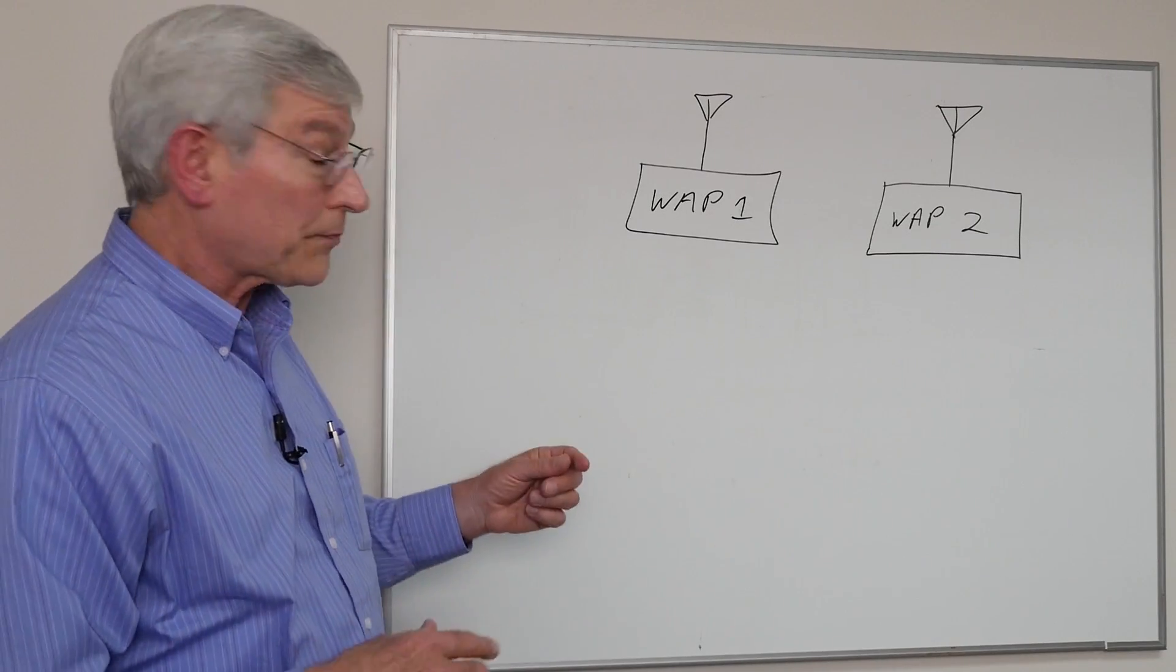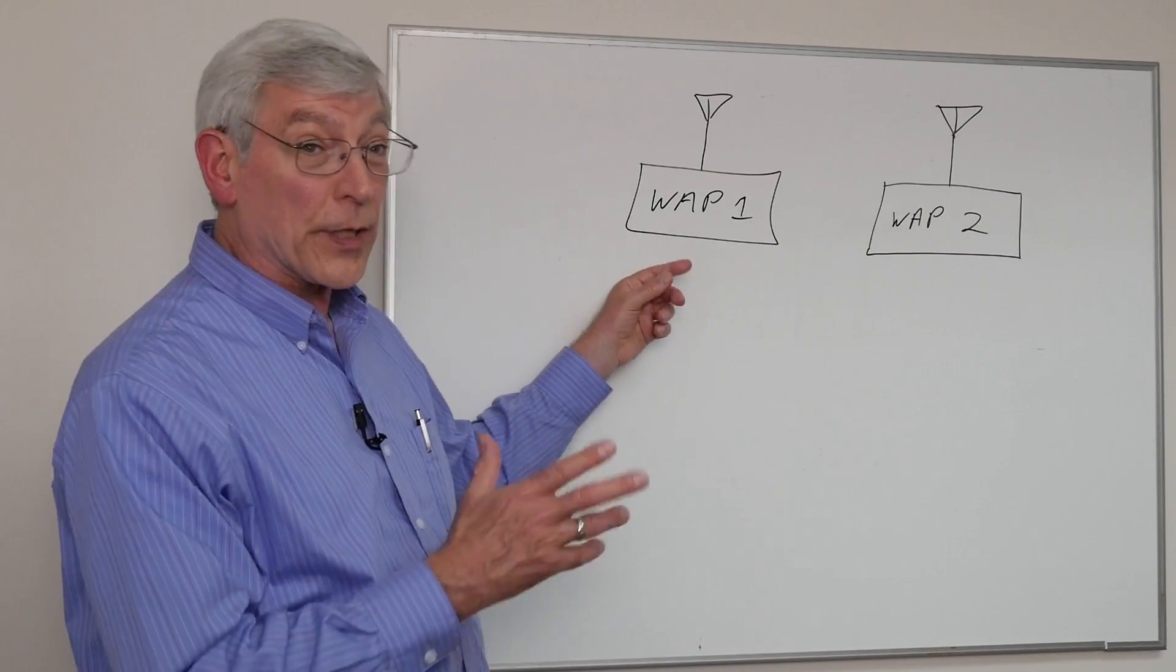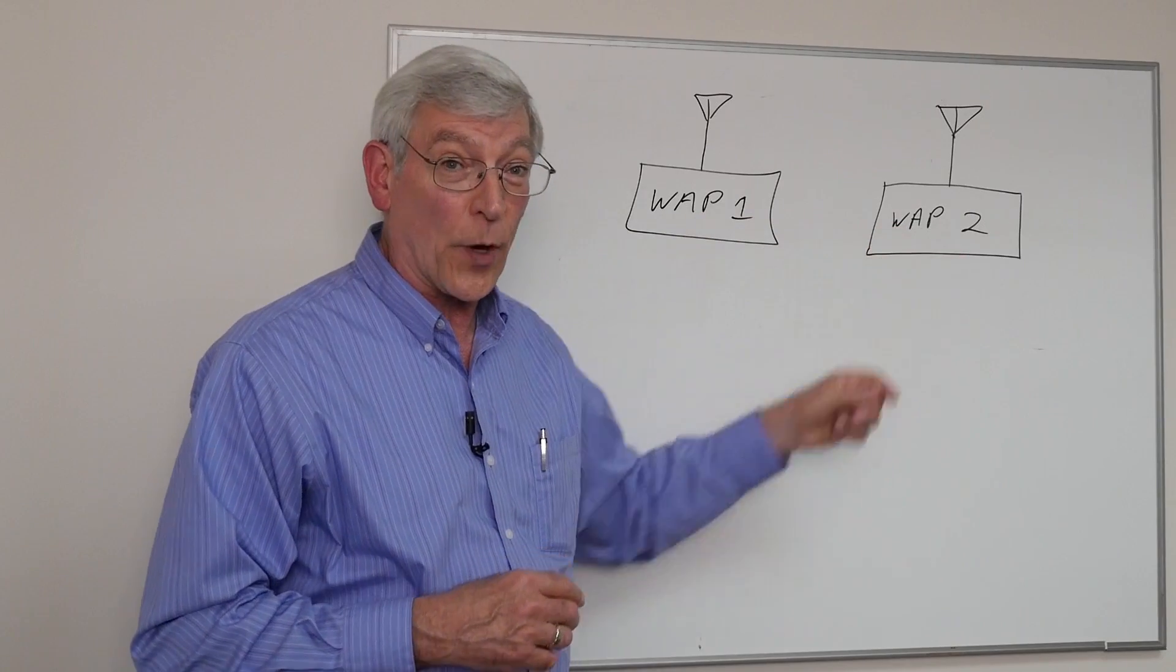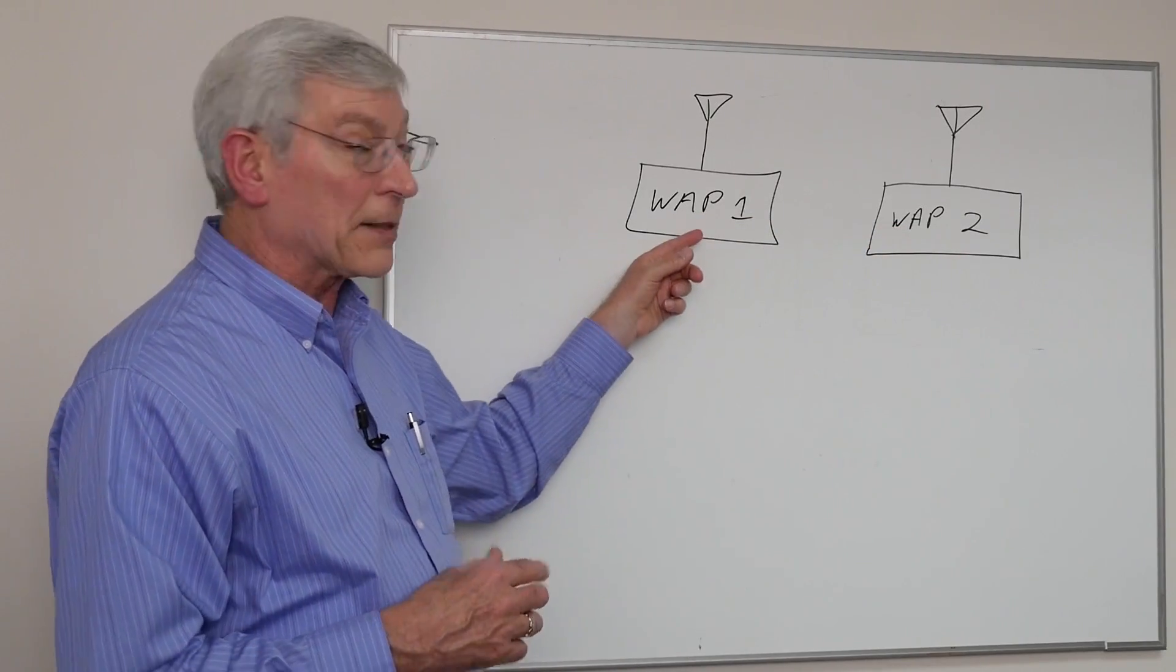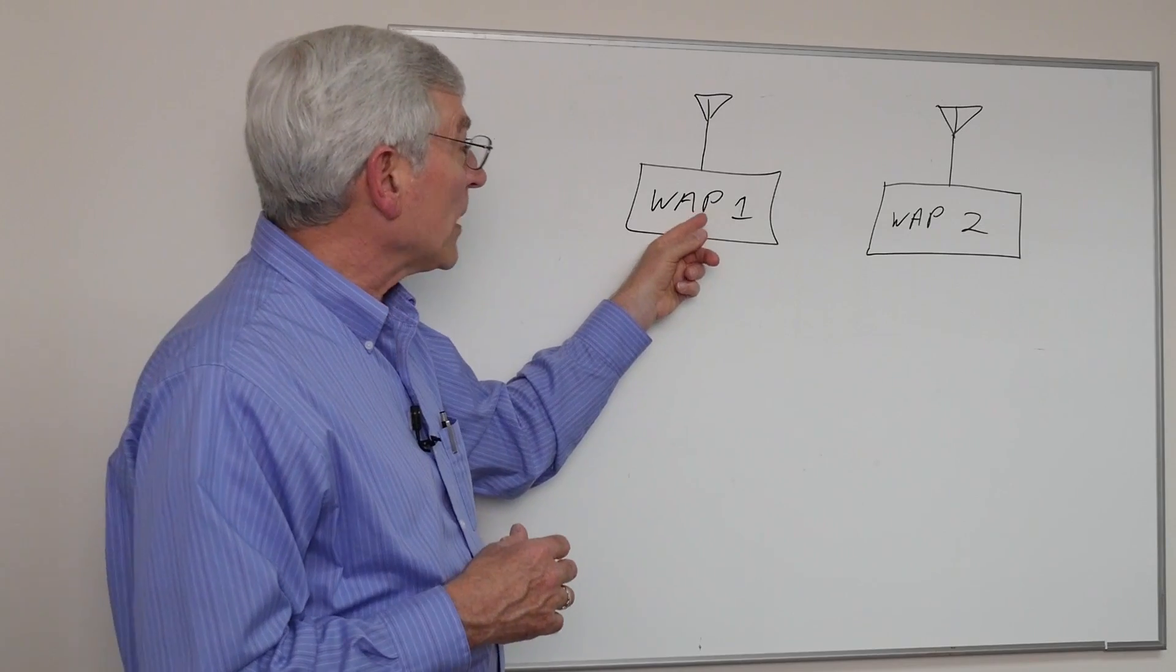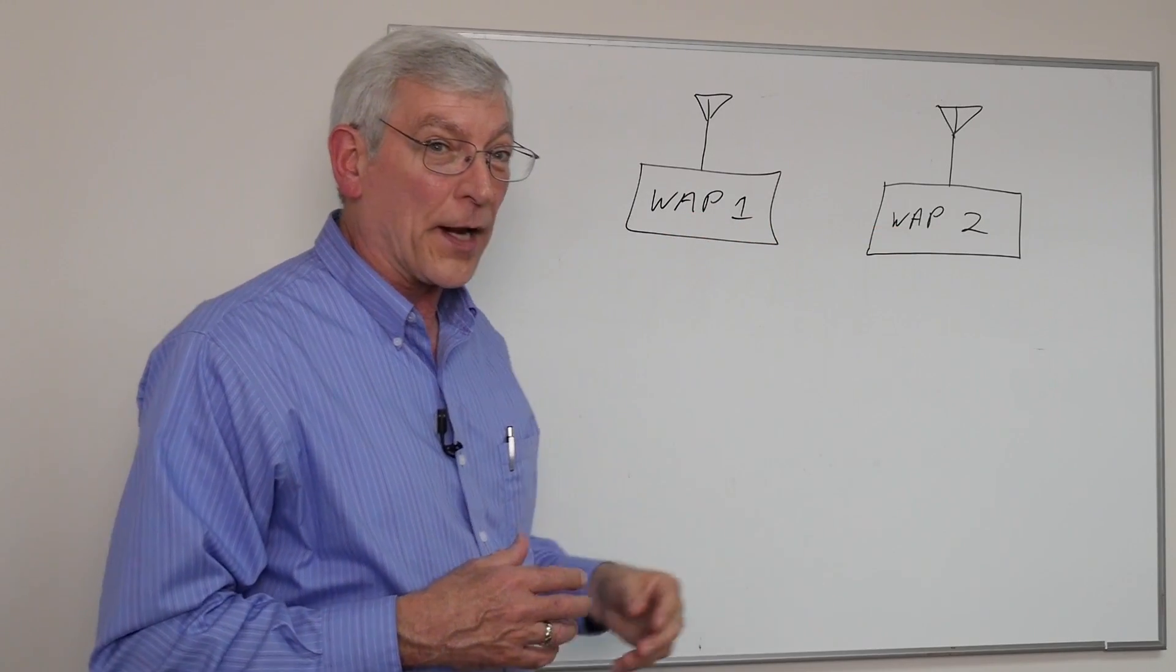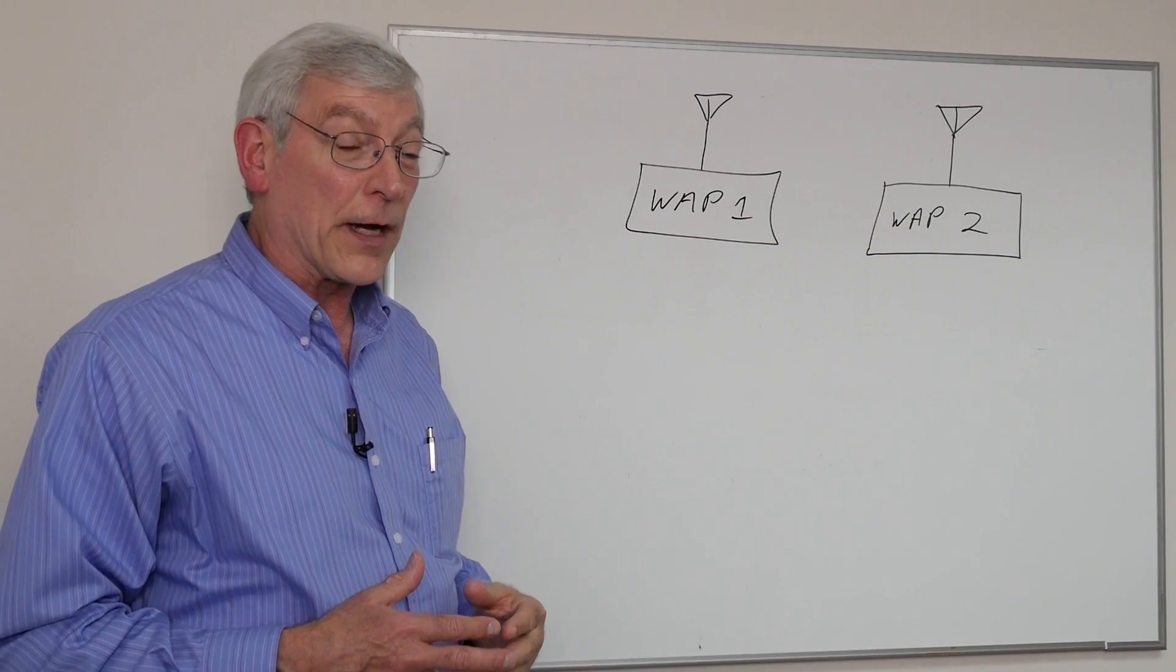In this classroom example with 30 students and two wireless access points, we're going to put both access points on channel 1. By putting both access points on channel 1, you may think that we're creating interference but we're not, because of the arbitration that's built into the 802.11 system.